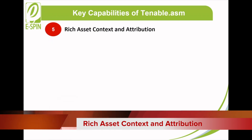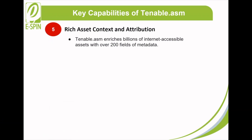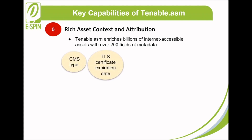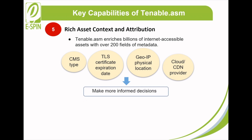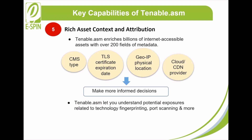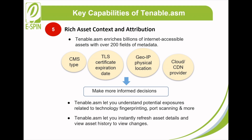Rich asset context and attribution: Tenable ASM enriches billions of internet-accessible assets with over 200 fields of metadata — such as CMS type, TLS certificate expiration date, GeoIP physical location, and cloud or CDN provider — to help you make more informed decisions. Tenable ASM lets you understand potential exposures related to technology fingerprinting, port scanning, and many more. You can instantly refresh asset details and view asset history to track changes.